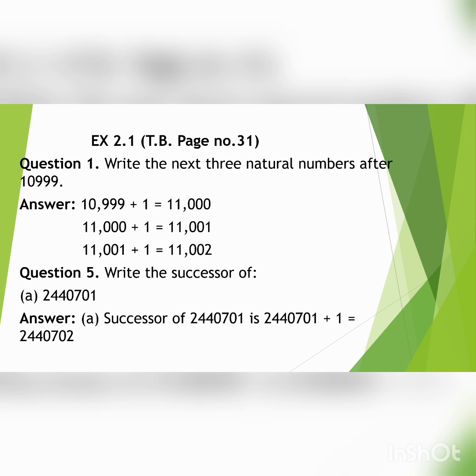Now we will solve exercise 2.1. Question 1: Write the next three natural numbers after 10,999. So you have to write next three natural numbers. 10,999 plus 1, that is going to be 11,000. Then 11,000 plus 1, that is 11,001. 11,001 plus 1, 11,002. So three natural numbers are 11,000, 11,001, 11,002.